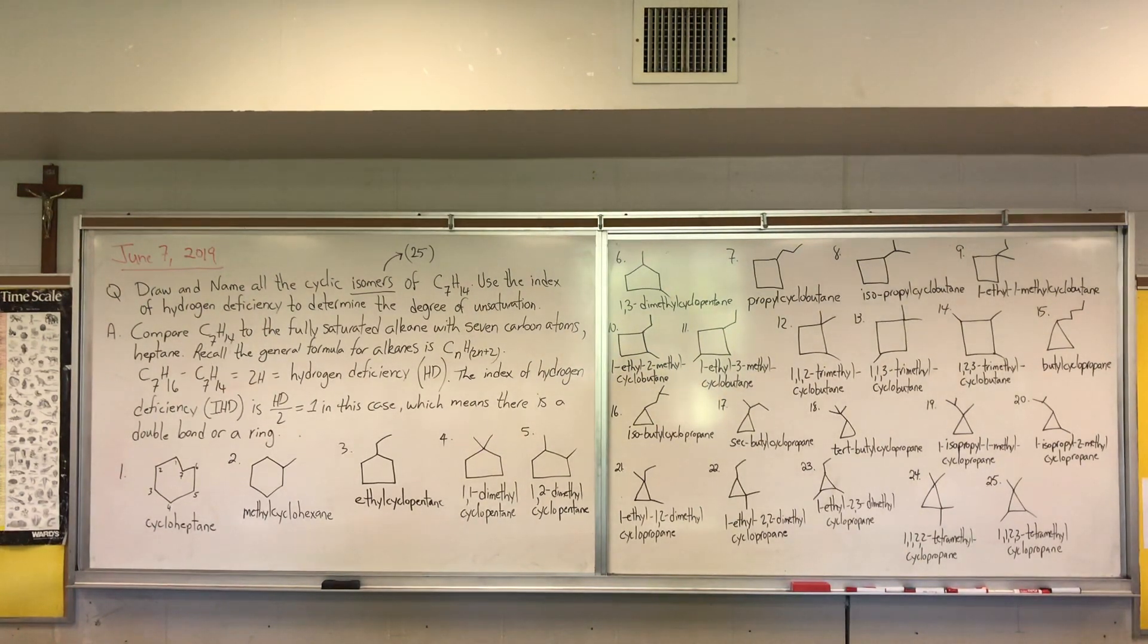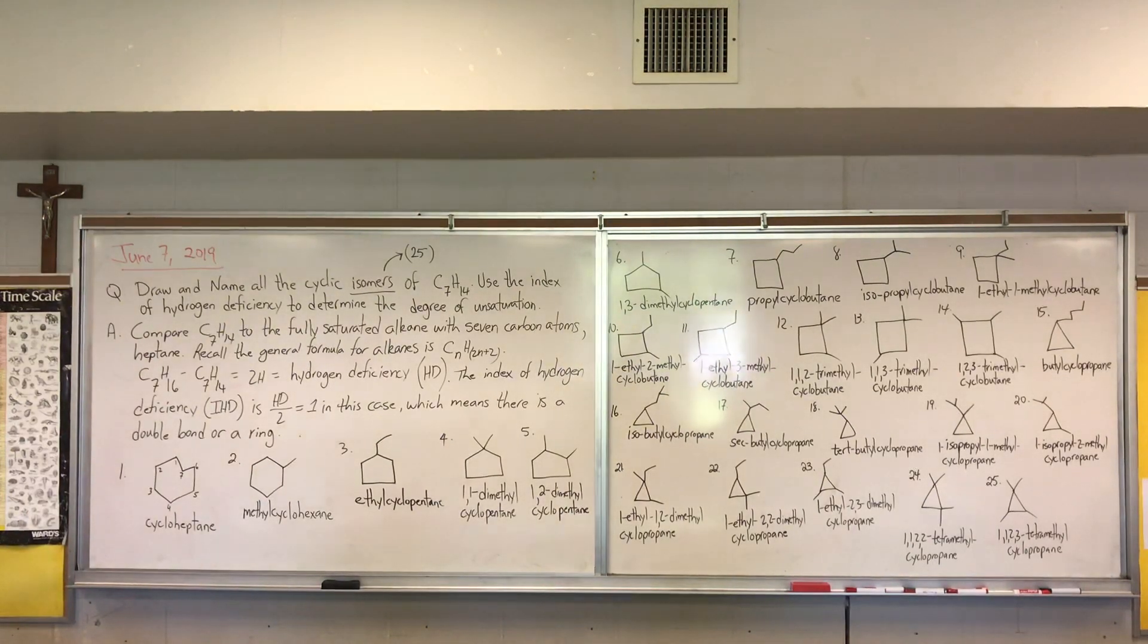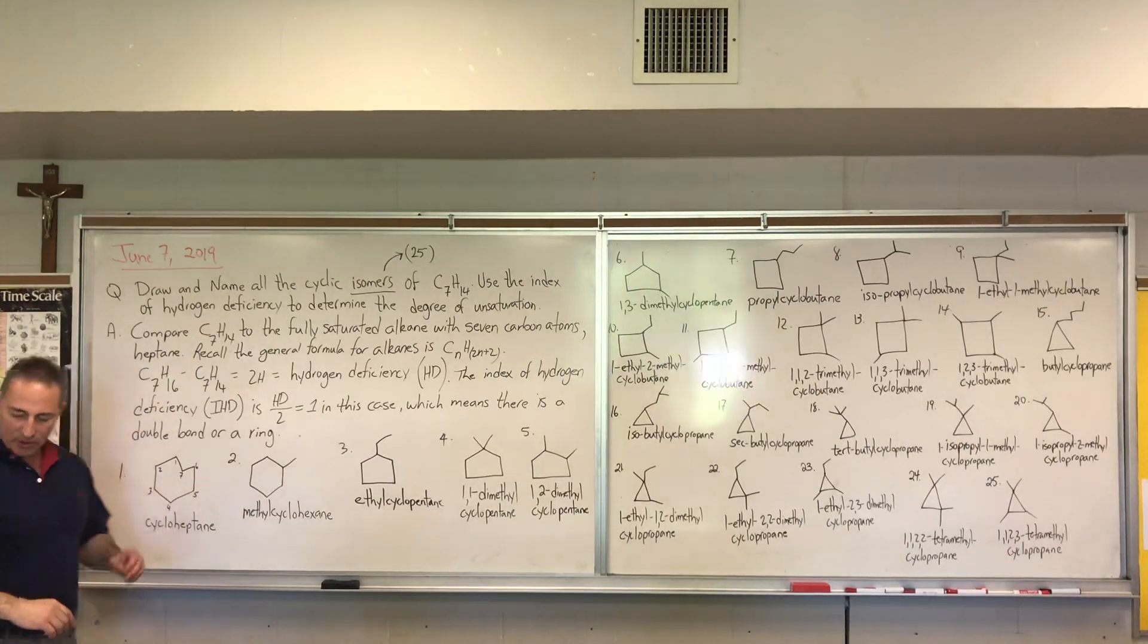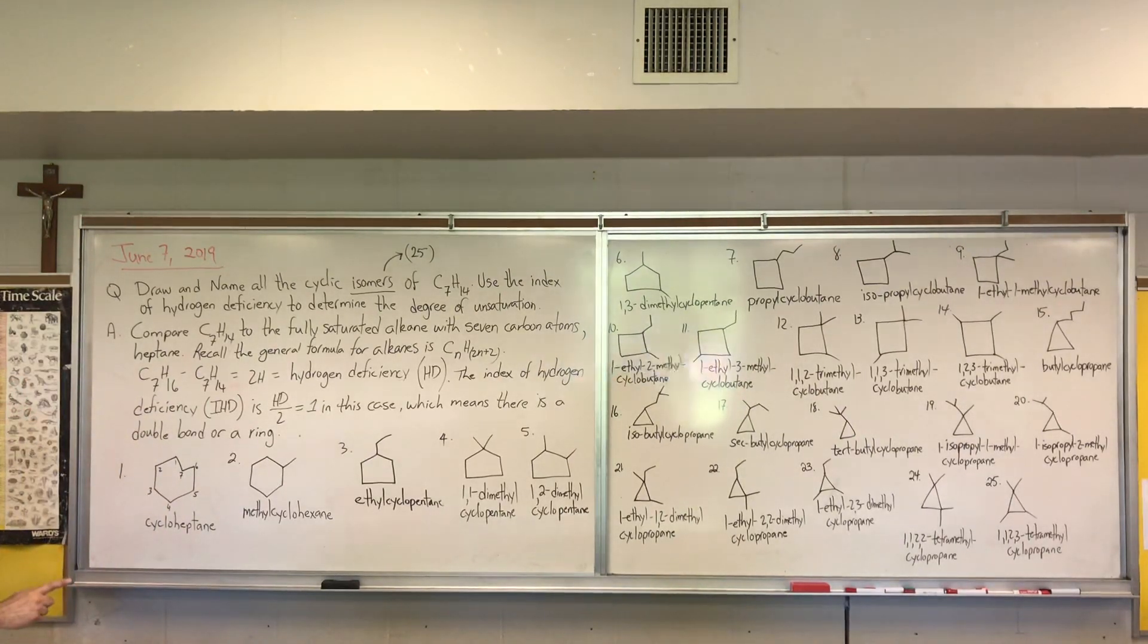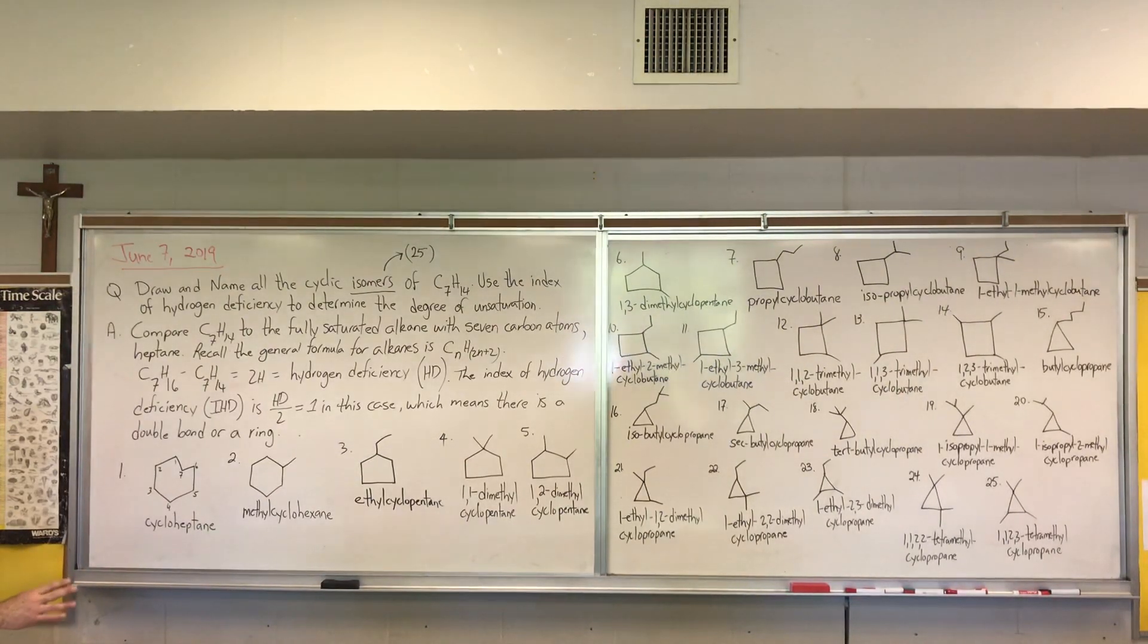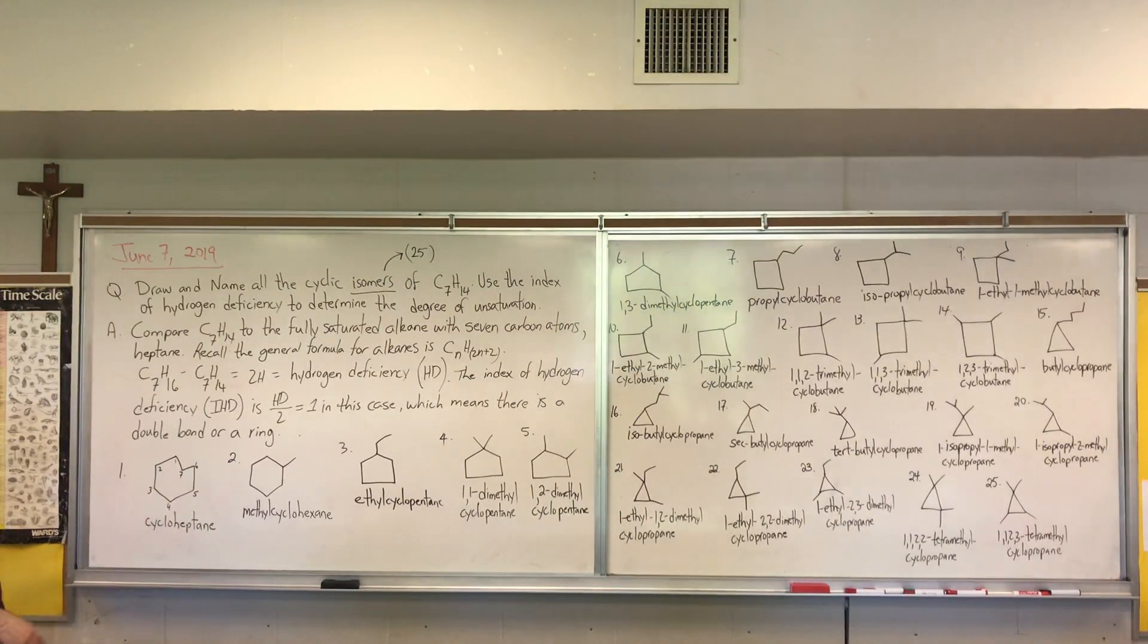In this video we're going to look at how to predict isomers based on the formula of an alkane. There's a rule called the index of hydrogen deficiency, which if you know the number of hydrogens that are missing, you can narrow down the number of structures that you can draw from the formula. In this question I ask, draw and name all the cyclic isomers, of which there are 25, of C7H14. Use the index of hydrogen deficiency to determine the degree of unsaturation.